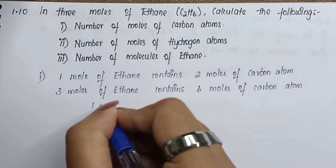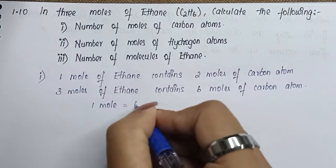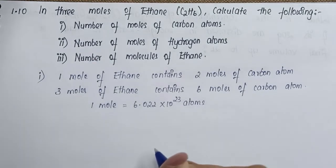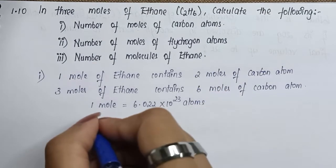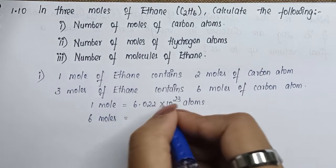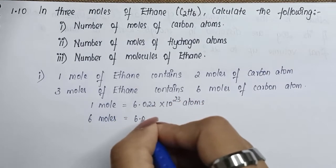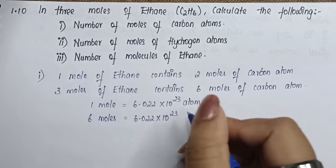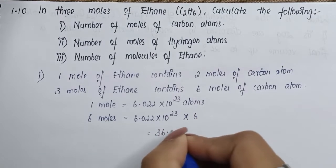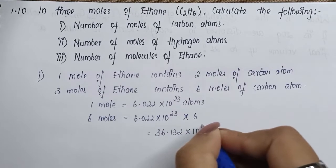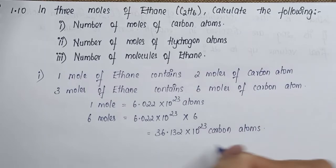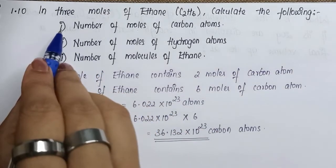One mole is equal to 6.022 × 10²³ atoms. Therefore, six moles is equal to six into 6.022 × 10²³, which gives us 36.132 × 10²³ carbon atoms. This is the final answer for the first question.